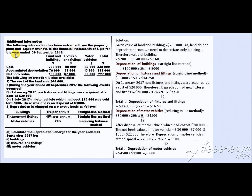Additional information has been extracted from the property, plant and equipment note, showing cost, depreciation, net book value, method of depreciation, and rate of depreciation. In Part B, we calculate the depreciation charges for the year ended 30th September 2017. For buildings: the cost given is $200,000 but $40,000 belongs to land, so building cost is $200,000 minus $40,000 = $160,000. At a 5% straight-line rate, depreciation for buildings = $160,000 × 5% = $8,000.